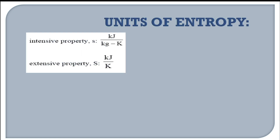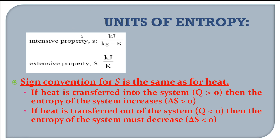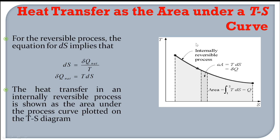Regarding units of entropy: specific entropy is denoted by lowercase s in kilojoules per kilogram-kelvin (kJ/kg·K). Total entropy, denoted by uppercase S, is an extensive property with units of kJ/K or J/K. The sign convention is the same as for heat: heat transferred into a system increases entropy; heat transferred out of the system decreases entropy.